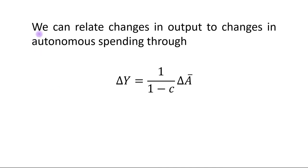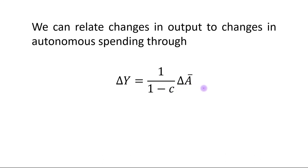We can relate changes in output to changes in autonomous spending through: change in Y equals 1 upon (1 minus MPC) times the change in autonomous spending. Thank you.